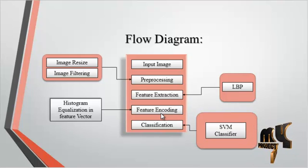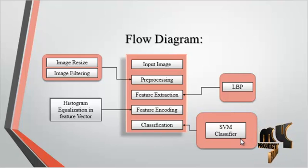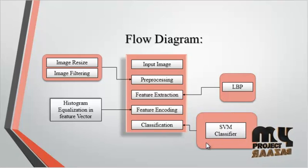In the feature encoding process, the extracted pattern image is encoded using histogram vector creation. After feature encoding, classification is done using SVM — Support Vector Machine. The classifier takes three inputs: the test feature, the train feature, and the target. The classification result is output in the form of a label, which is used to identify each person.